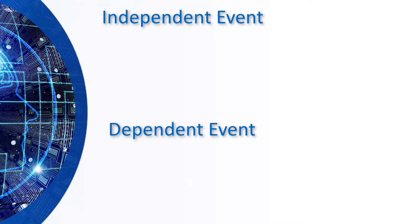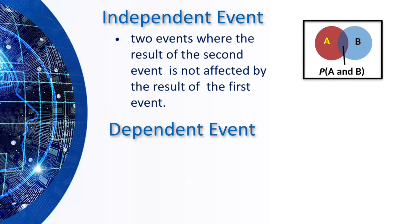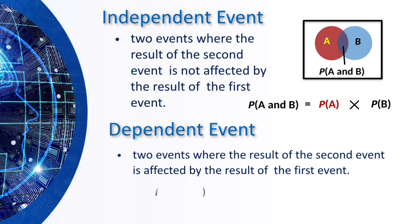Let's proceed to independent and dependent events. An independent event is where the result of the second event is not affected by the result of the first event. The formula is P(A and B) equals the product of their probabilities: P(A) times P(B). For a dependent event, the result of the second event is affected by the result of the first event. The formula is P(A and B) = P(A) times P(B given A has happened already).